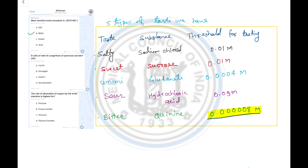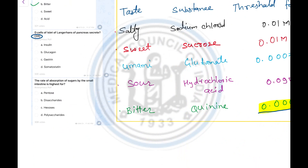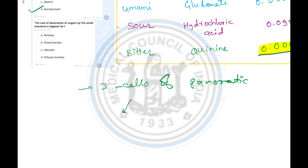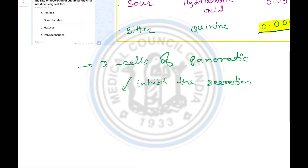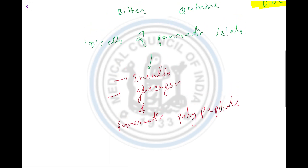The next question is: which cells of the islets of Langerhans of the pancreas secrete somatostatin? The correct answer is D — the D cells of the pancreas. Somatostatin inhibits the secretion of insulin, glucagon, and pancreatic polypeptide.